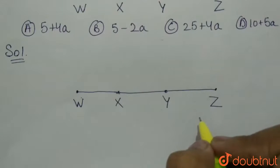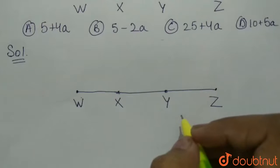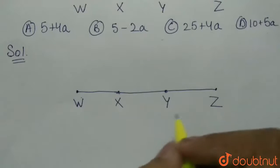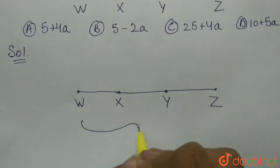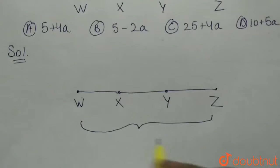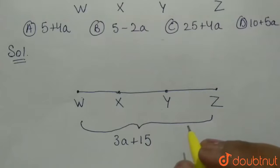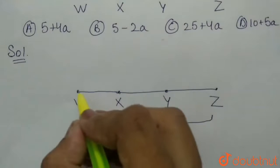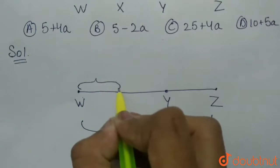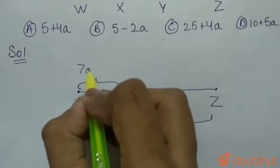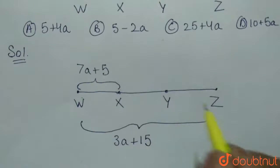Length WZ is given to be 3a plus 15. So, this length WZ is 3a plus 15. And WX is 7a plus 5. So, this length WX is 7a plus 5.